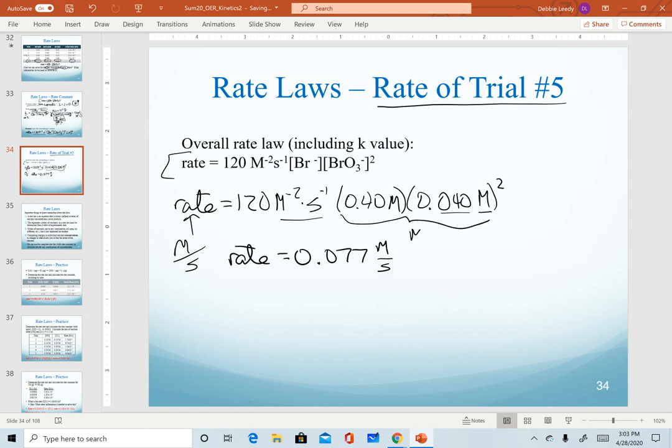Notice with our two reactants, we again end up with molarity cubed, which is going to cancel out that negative 2 and leave us with 1. So we do have units of molarity per second. And so now we have an equation that allows us to calculate the rate of reaction for any given concentration values of our reactants.